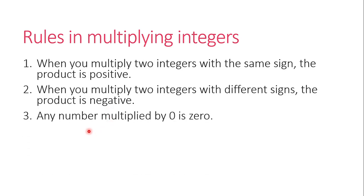Third, any number multiplied by 0 is 0. This is the zero property. For example, 5 times 0 is 0. One million times 0 is still 0. Or negative 1,000 times 0, the product is always 0.